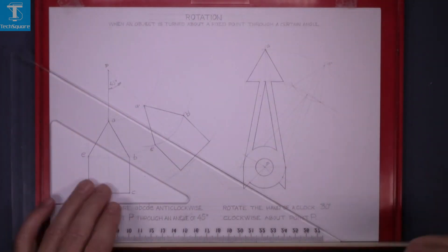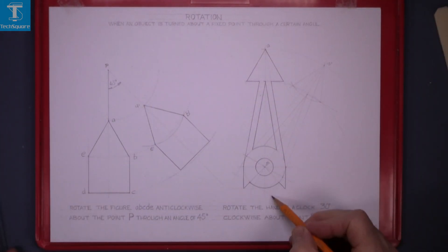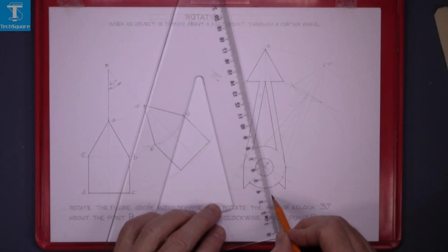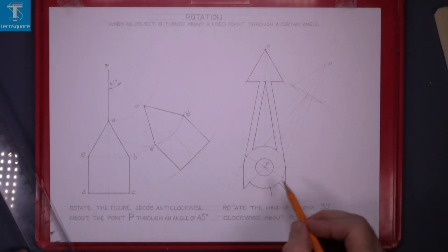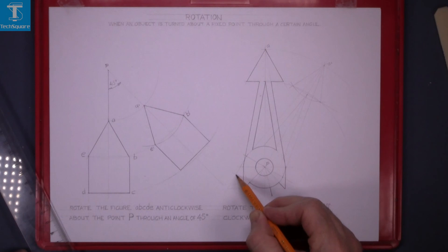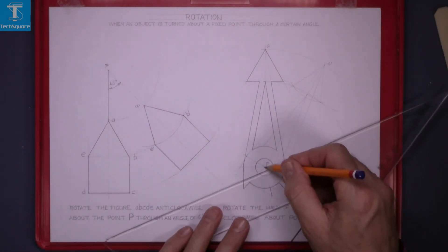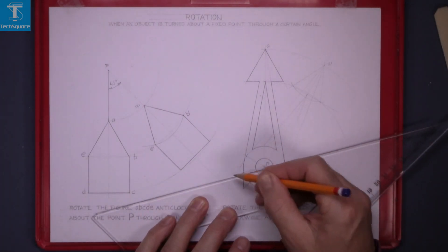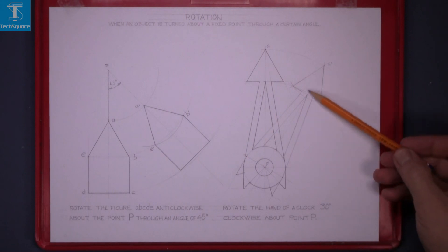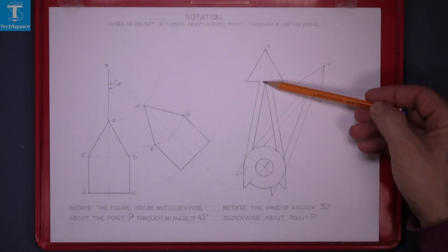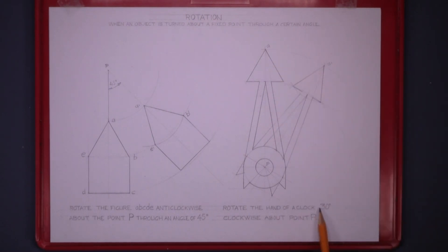And now to get the bottom of it. This point here is where the new point will be. Join to the centre point. And this point here is the new point. Join back to the centre. And that's the image of the hand when it's rotated 30 degrees about point P.